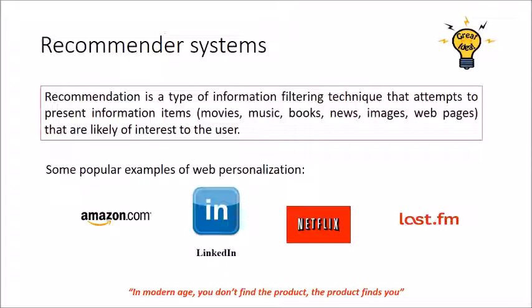In Google News it is news. In Flipkart or Snapdeal, everywhere the phenomenon of recommender system comes into the picture. There is a saying in modern age: you don't find the product, the product finds you. What exactly is the recommender system? Recommender system is nothing but a technique which suggests a particular item - the item can be movie, music, news, or image - to a particular user based on his past experiences. Whatever you have experienced in the past, similar kinds of things will be recommended in your future.